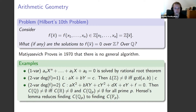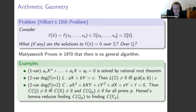Moving to two variables, the problem becomes difficult in full generality, so we further restrict to low degrees. For a degree-one polynomial — a linear equation with integer coefficients — we can take x to be any rational number and solve for y, since the rationals form a field. So all rational points are in bijection with the rationals. Over the integers, there's a theorem: integer solutions exist if and only if the GCD of A and B divides C, and in that case we can find all solutions explicitly.